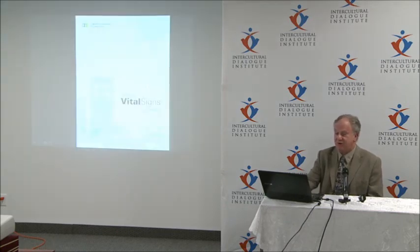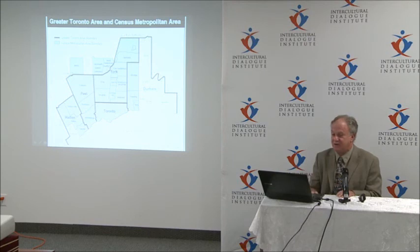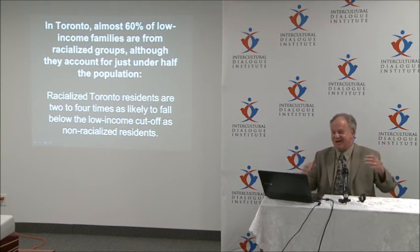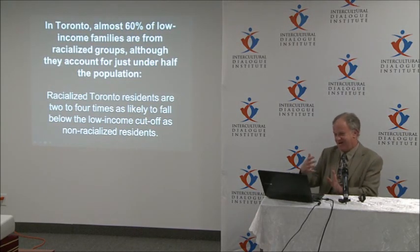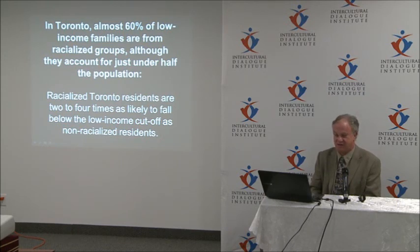The Toronto Vital Signs Report shows that almost 60% of low-income families are from racialized groups, although they account for just under half the population. Racialized Toronto residents are two to four times as likely to fall below the low-income cutoff as non-racialized residents, which is clearly consistent with the data from Michael Orm.